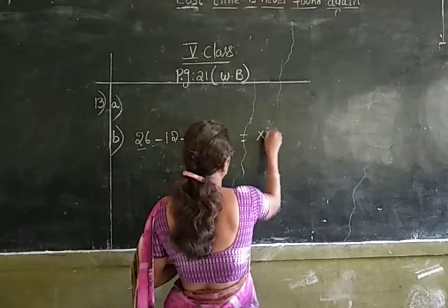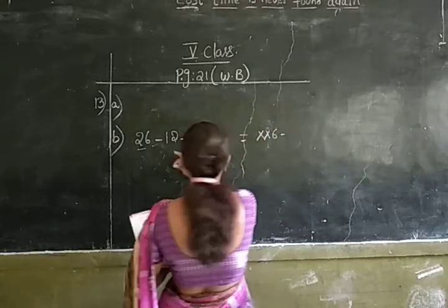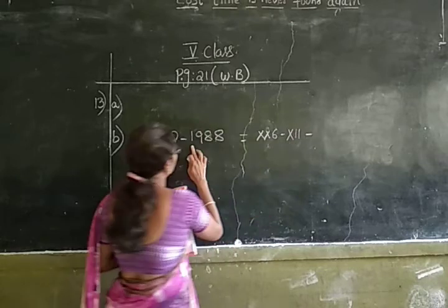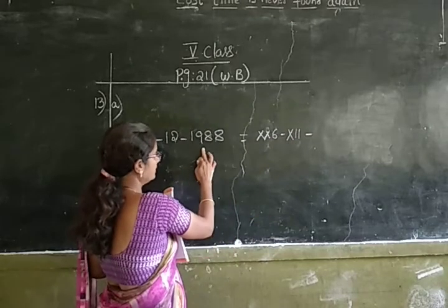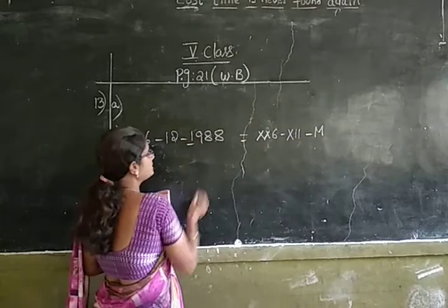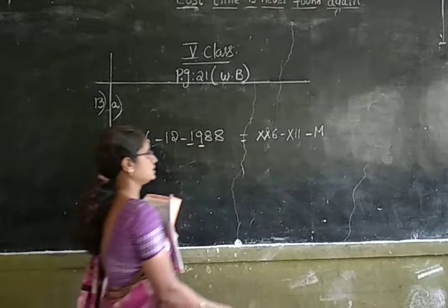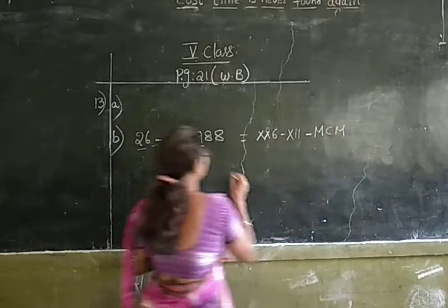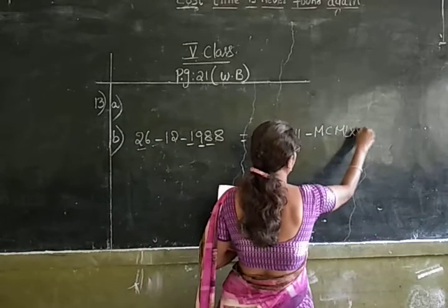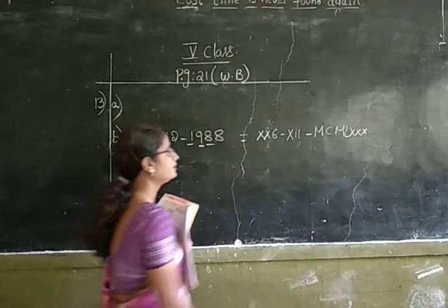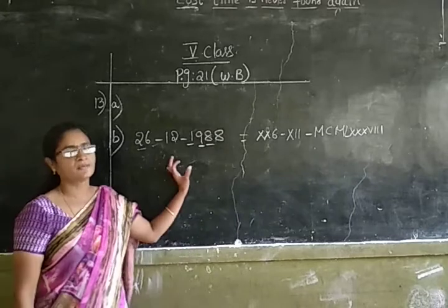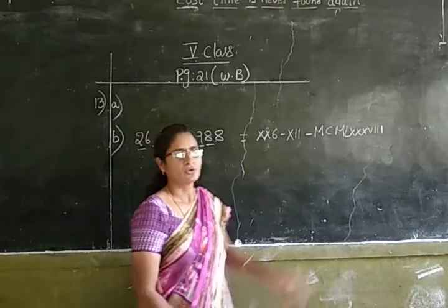26 is 20 plus 6. 12 means XII. Next, 1988 is 1000 plus 900 plus 80 plus 8. 1000 means M. 900 means CM. 80 means LXXX. And 8 means VIII. So he has written his date of birth in Indo-Arabic numerals and we have converted it into Roman numerals.